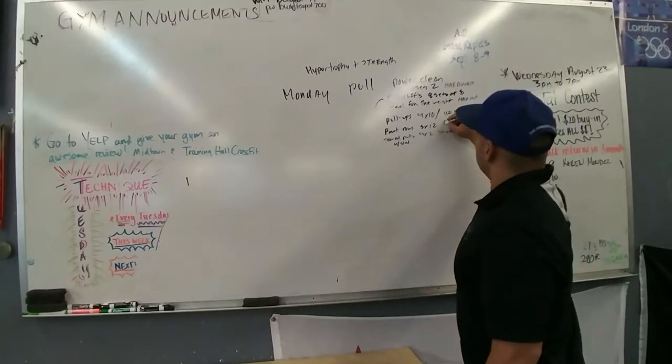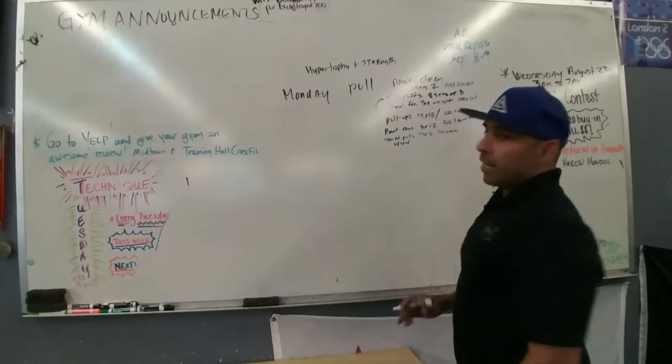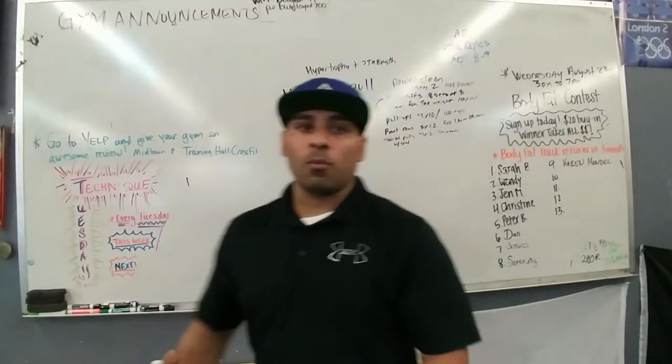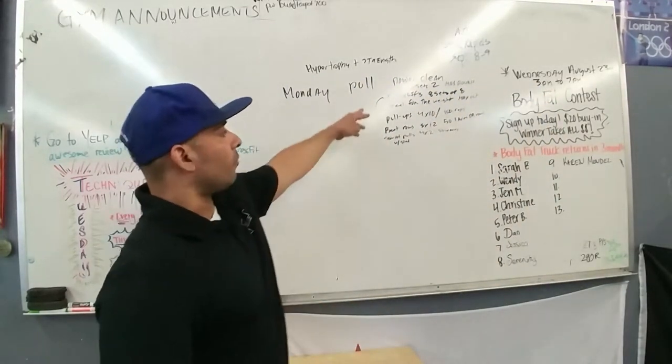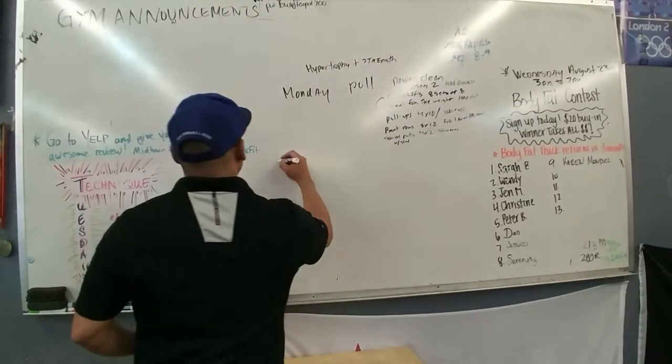100 reps. And then right here, maybe 50, 50 one-armed dumbbell rows. All right, so basically pull anything that works the back. So start off with some big movements into accessory movements right here. So then we'll go into Wednesday.